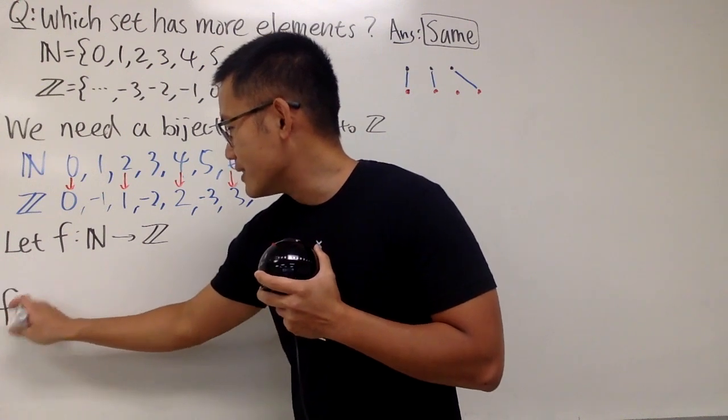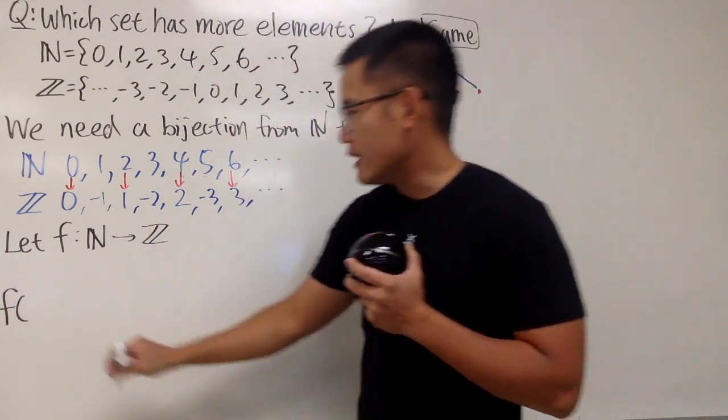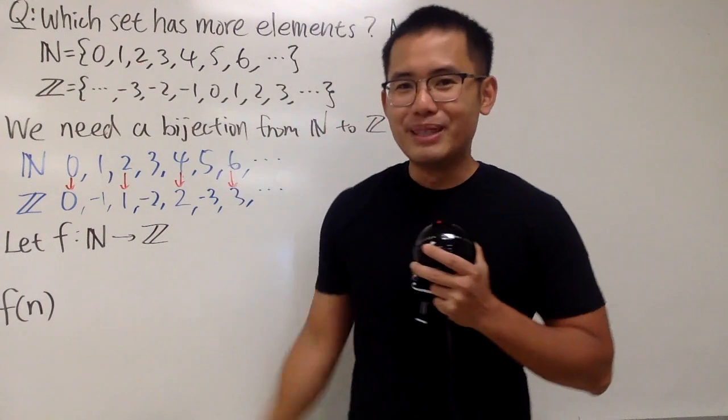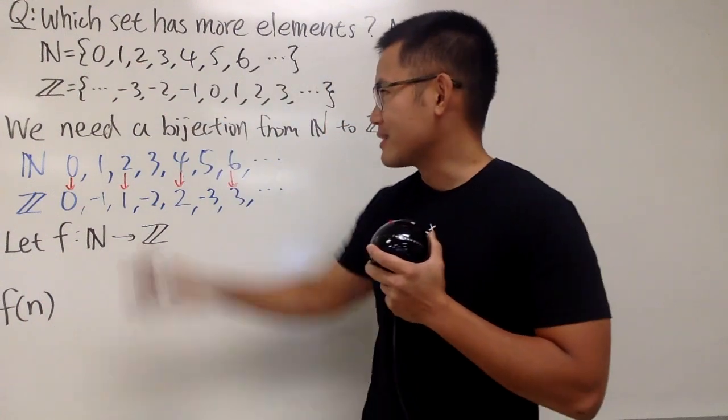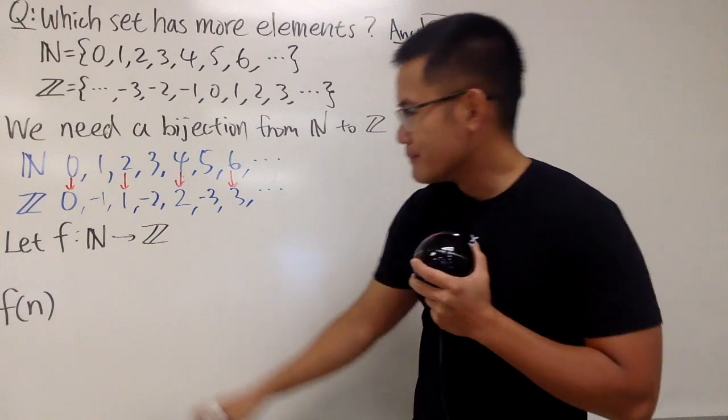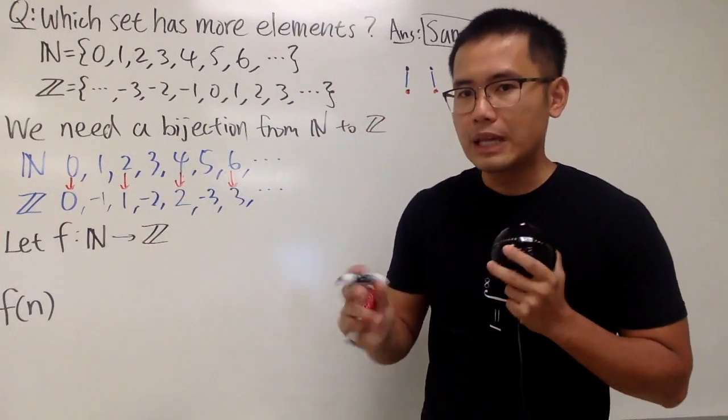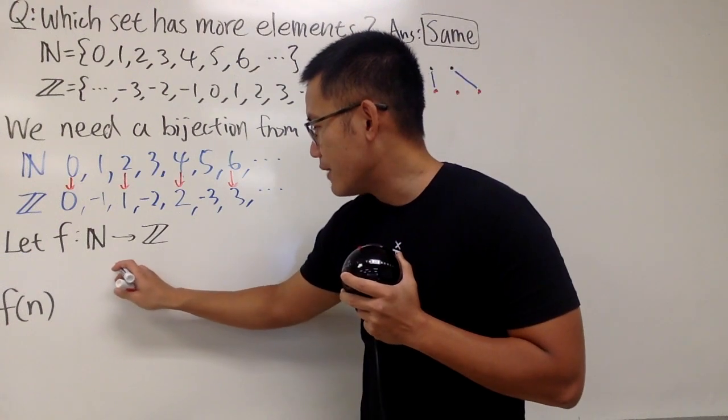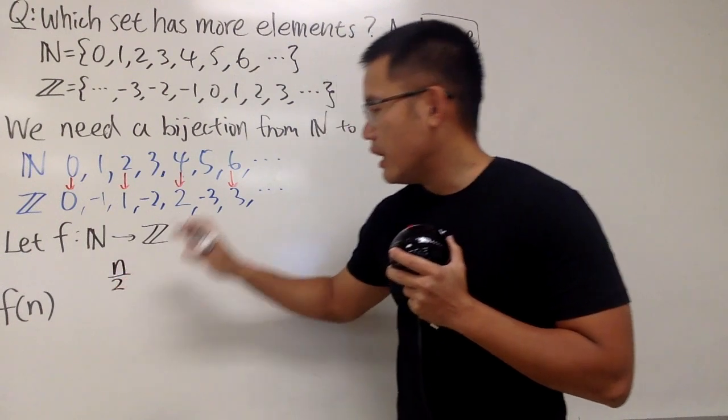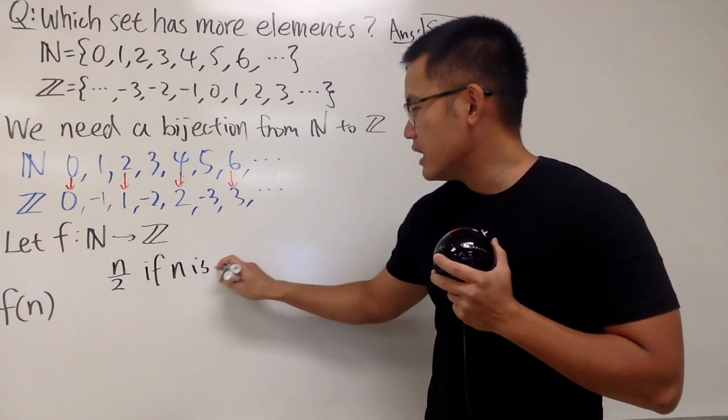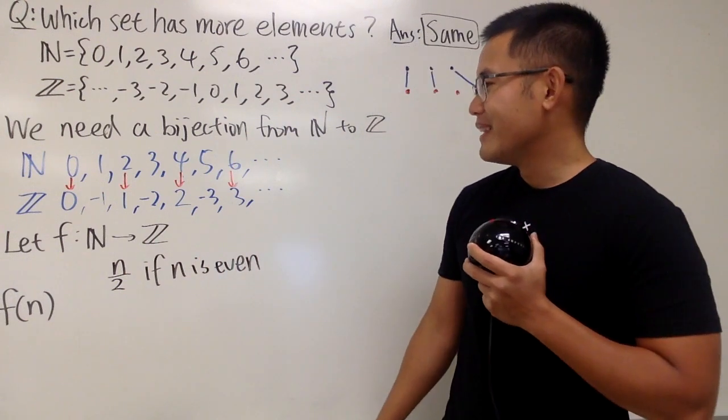Now it's time for us to write down the formula. I will, of course, say f and then the input. Let me just use little n for the elements from N, capital N, like this n. Anyway, here we go. All right. Look at all the even numbers. Divided by 2, that's the first piece of the formula that we need. So I need to have n over 2. And we do this if n is even.